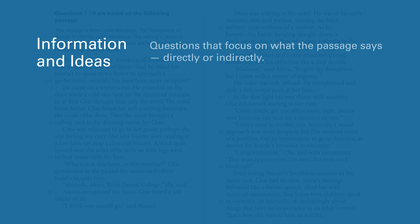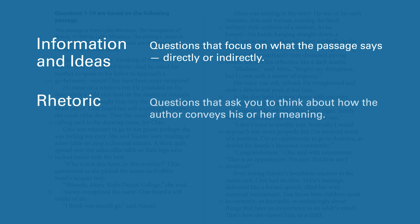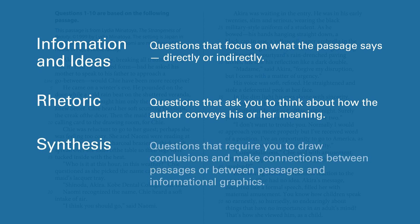The questions on the reading test fall into three main categories: information and ideas — questions that focus on what the passage says, directly or indirectly; rhetoric — questions that ask you to think about how the author conveys his or her meaning; and synthesis — questions that require you to draw conclusions and make connections between passages, or between passages and informational graphics.